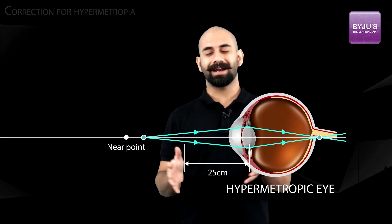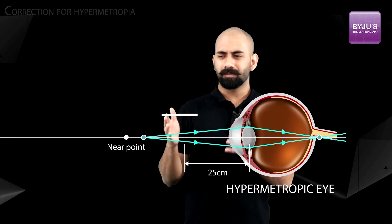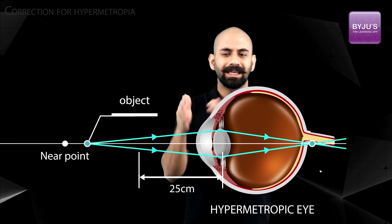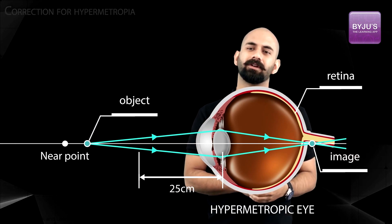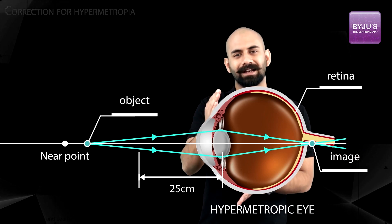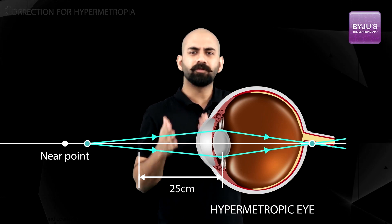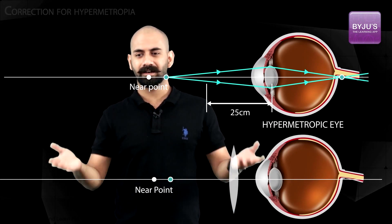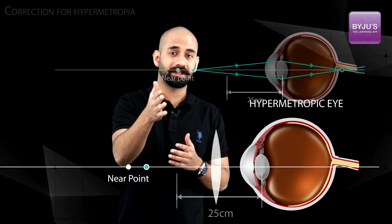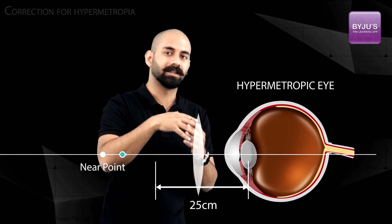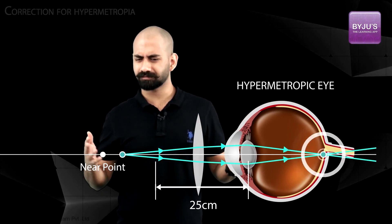To correct hypermetropia: the problem is that for a close object the image is formed behind the retina, because the crystalline lens cannot converge the rays sufficiently. The solution is to place a converging lens in front of the eye to add extra convergence, so that the crystalline lens can then form the image on the retina.